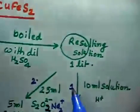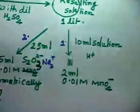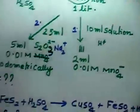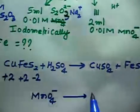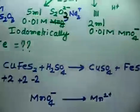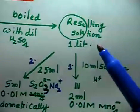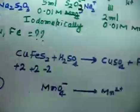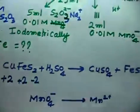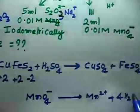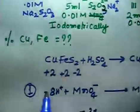Let us discuss titration 1 first. In this case, MnO₄⁻ in acidic medium goes to Mn²⁺. Your solution will contain Cu²⁺ and Fe²⁺. Now Cu²⁺ can't be oxidized — Fe²⁺ gets oxidized to Fe³⁺. So this side you have MnO₄⁻ going to Mn²⁺ with 4H₂O and 8H⁺ gaining 5 electrons.